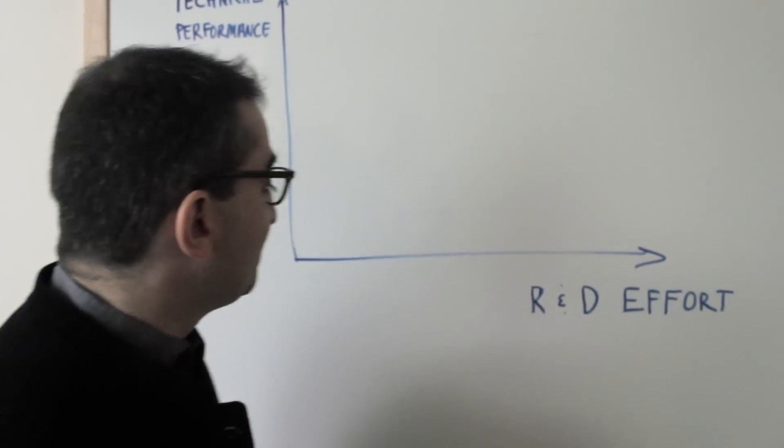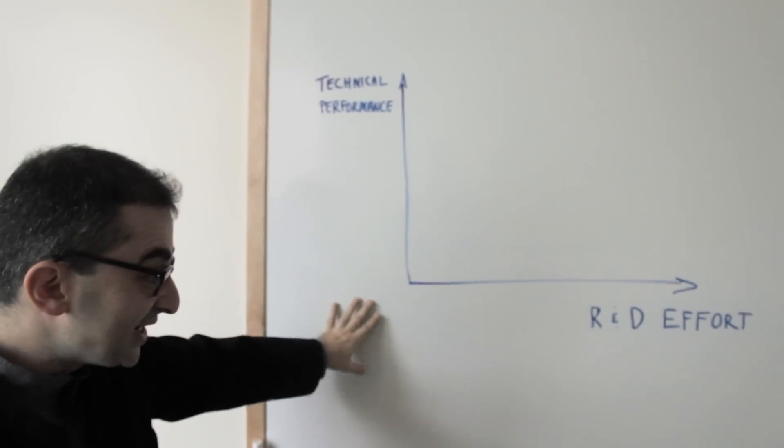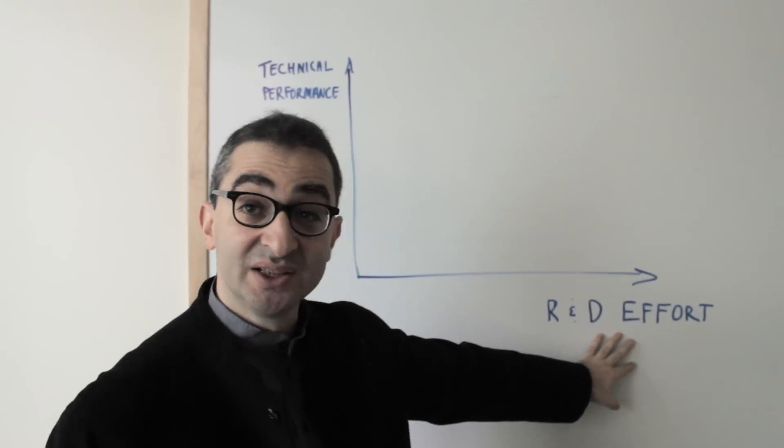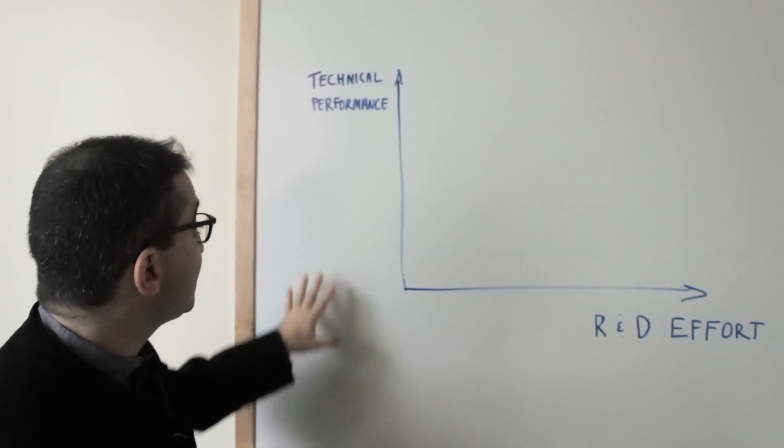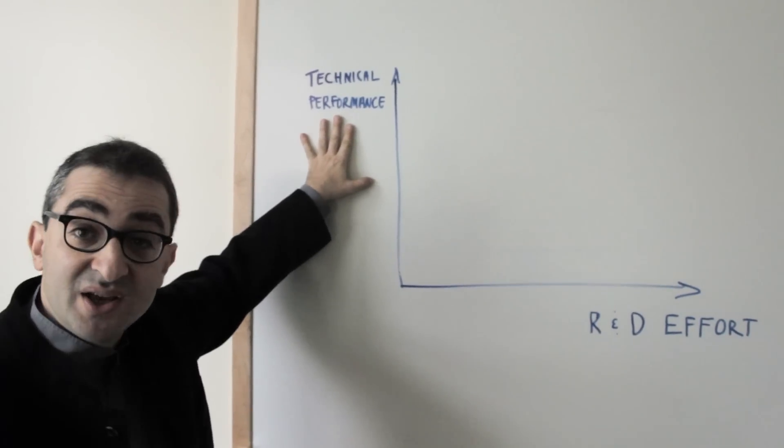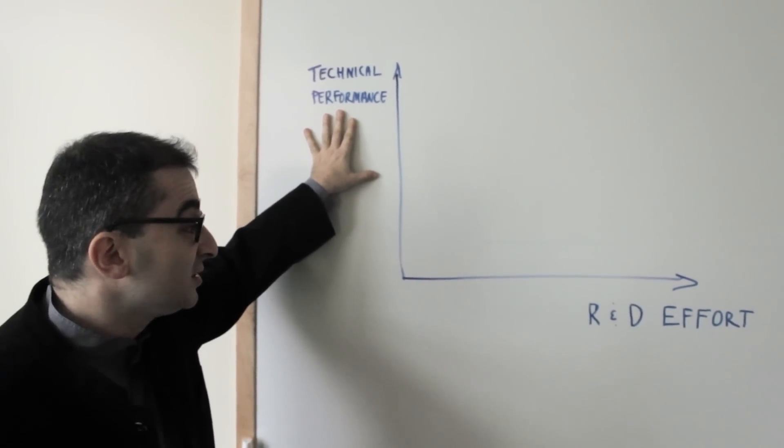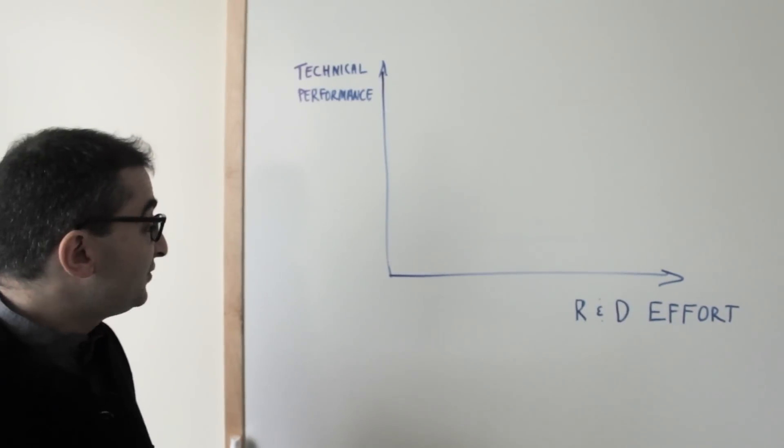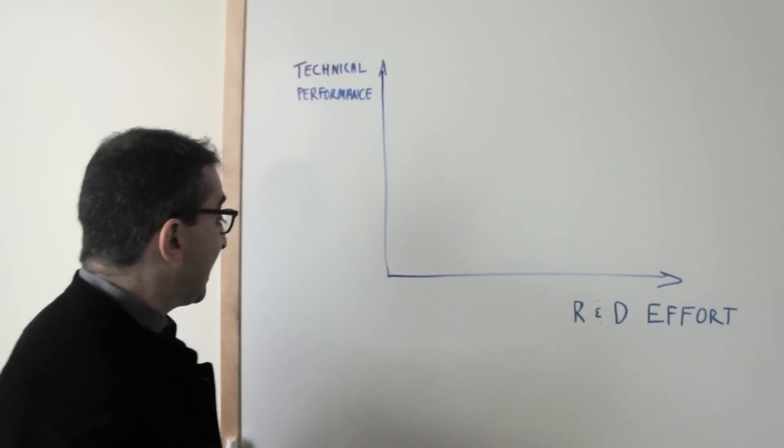Well, here is a very simple framework. It's called the S-curve. On the x-axis here, you have R&D investment. On the y-axis, some measure of technical performance, say resolution or maybe size. And the point of this framework is that it helps you think about how technologies evolve.